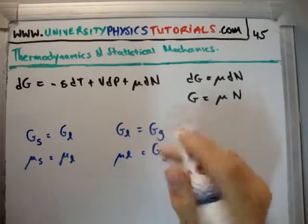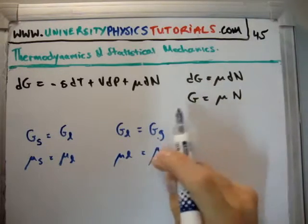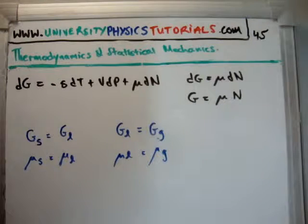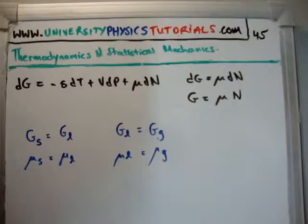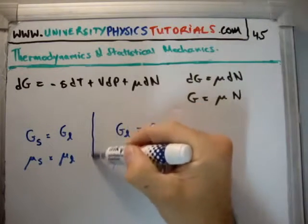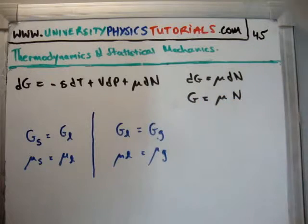You might ask, why is that? Well, if the chemical potentials were different, then the particles would have a tendency to flow into either the liquid or the gas phase or the solid or the liquid phase. But by the definition of equilibrium, that cannot happen. So the Gibbs free energies must be equal, and so too must the chemical potentials.